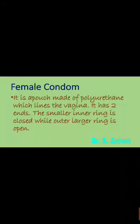The female condom is a pouch made up of polyurethane which lines the vagina. It has two ends: a smaller inner ring which is closed, and a wider, larger outer ring which is open.